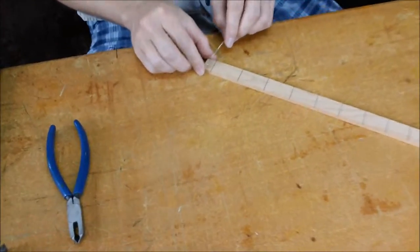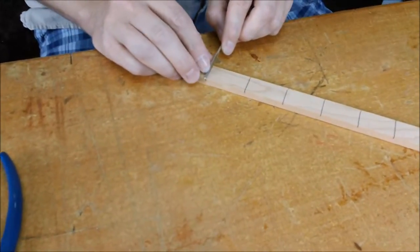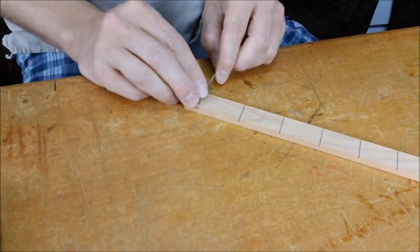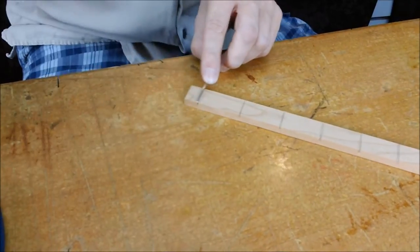You're just going to take your fret wire and put one edge of it like this. There's a little tang here that goes in the slot, and just tap it gently like that.